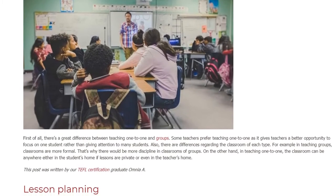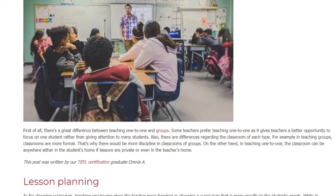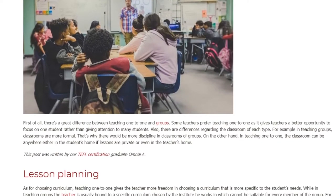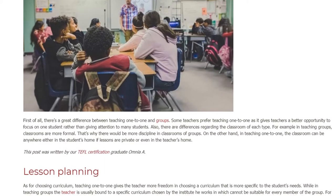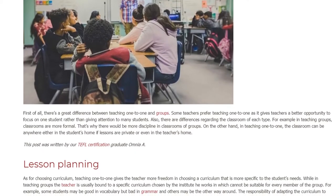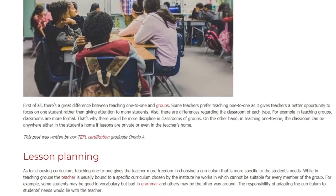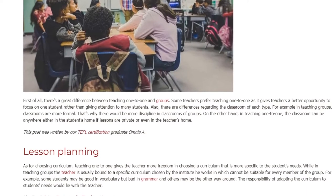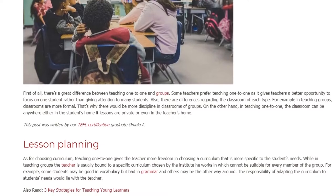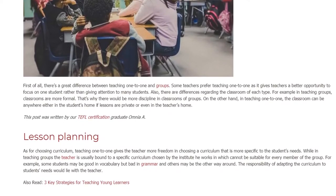Also, there are differences regarding the classroom of each type. For example, in teaching groups, classrooms are more formal. That's why there would be more discipline in classrooms of groups. On the other hand, in teaching one-to-one, the classroom can be anywhere — either in the student's home if lessons are private, or even in the teacher's home.